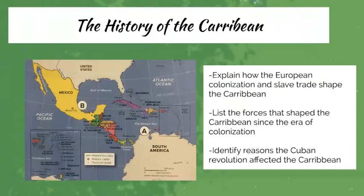When looking at the history of the Caribbean, we'll start with the first Caribbean people, who are categorized into two groups: the Arawak and the Carib. Both used canoes for traveling among the islands and were divided into villages ruled by chiefs. We'll look at those two groups and the history they carry in shaping the environment and culture of the Caribbean islands.